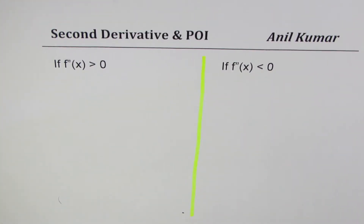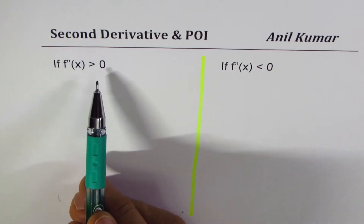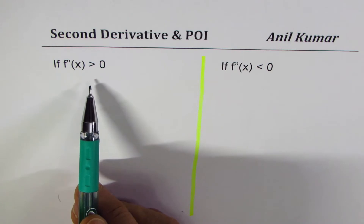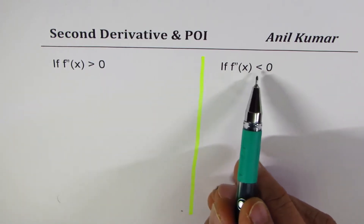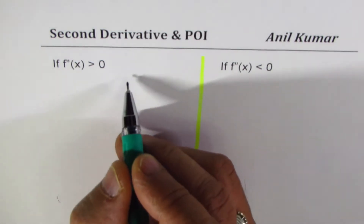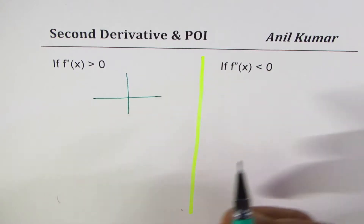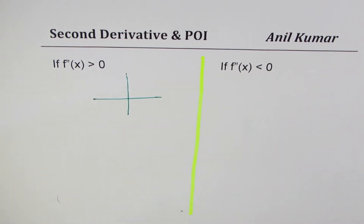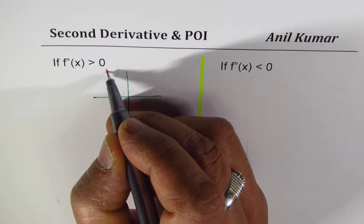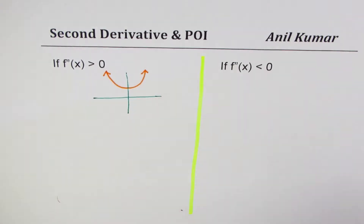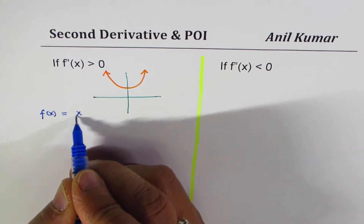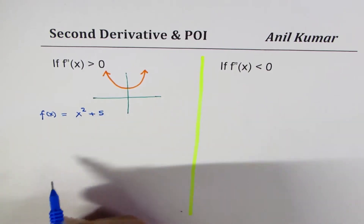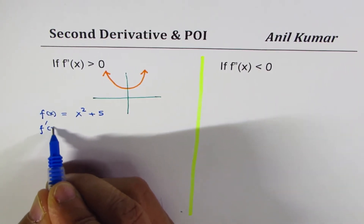I'm Anil Kumar and in this video we will learn: if the second derivative is greater than zero, how will the first derivative be, and what are the consequences on the function itself? We'll analyze the same when the second derivative is less than zero. We'll begin from what is known and derive the result. Let's start from the parabola — say we have a parabola opening upward, and the equation is f(x) = 2x² + 5.